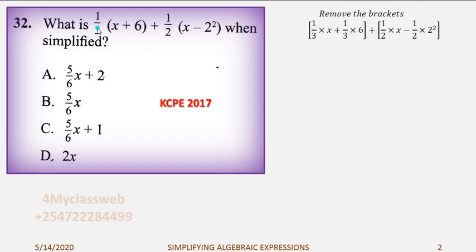If you look at now what we have here, I've taken 1 over 3, 1 over 3 and multiplied by x plus 1 over 3 multiplied by 6. The second part, I have 1 over 2 multiplied by x minus 1 over 2 multiplied by 2 squared. I have encroached this first part and the second part because I'm going to deal with each part at a time. Let me begin by this first part there. If I take 1 over 3 multiplied by x, I should have 1 over 3x. And 1 over 3 multiplied by 6, I will have 6 over 3. And that is what I have. 1 over 3x plus 6 over 3.